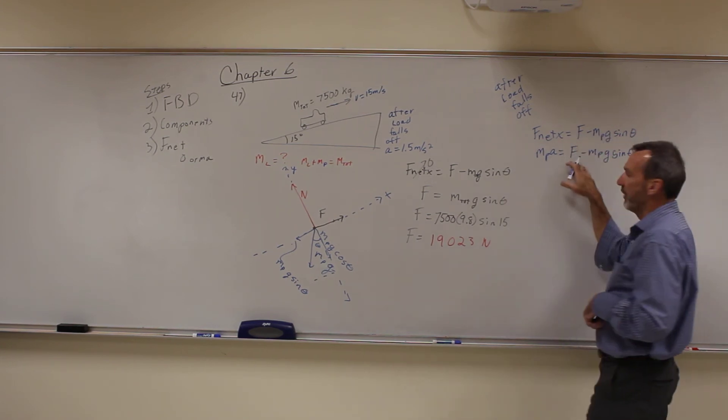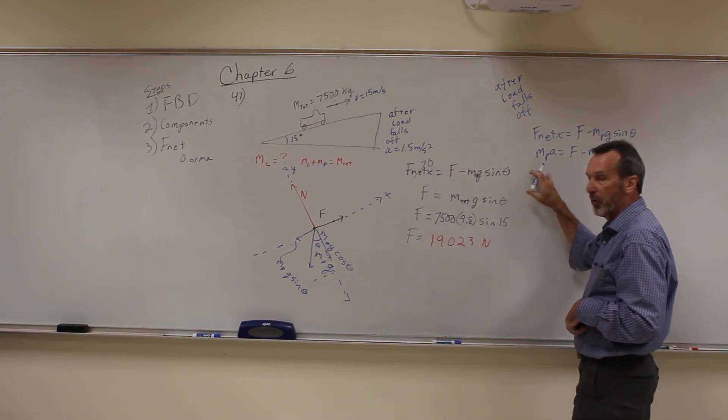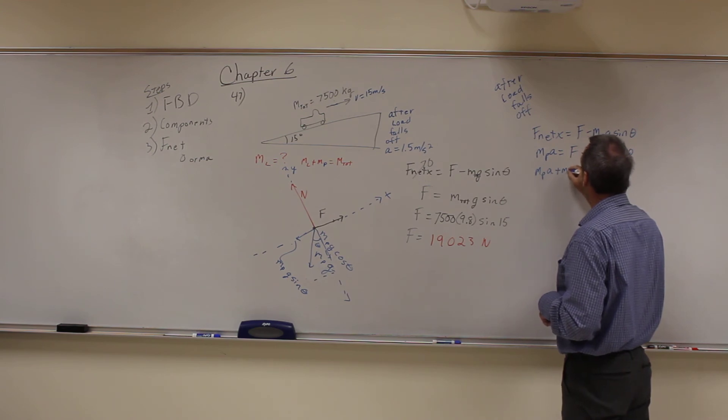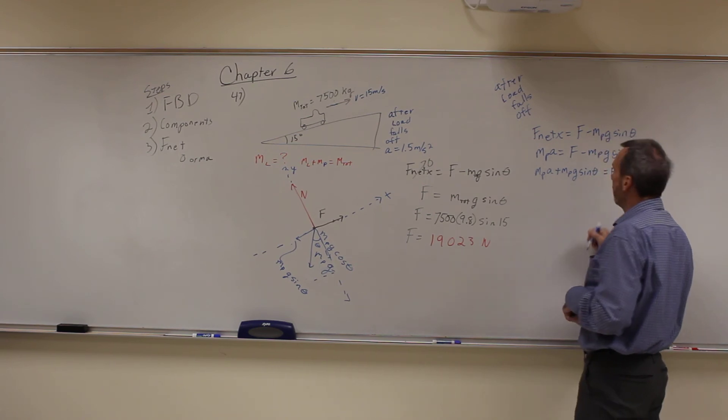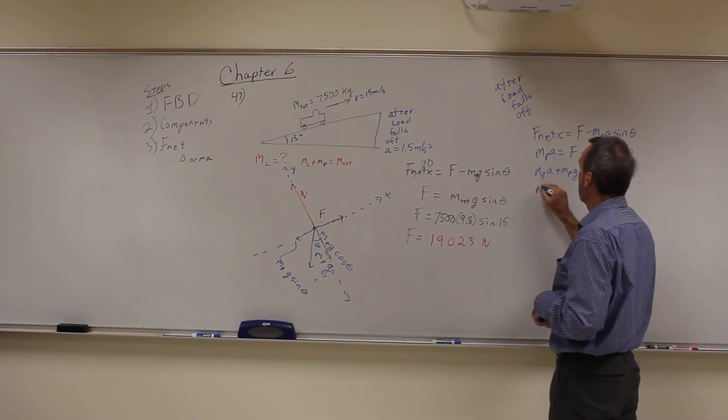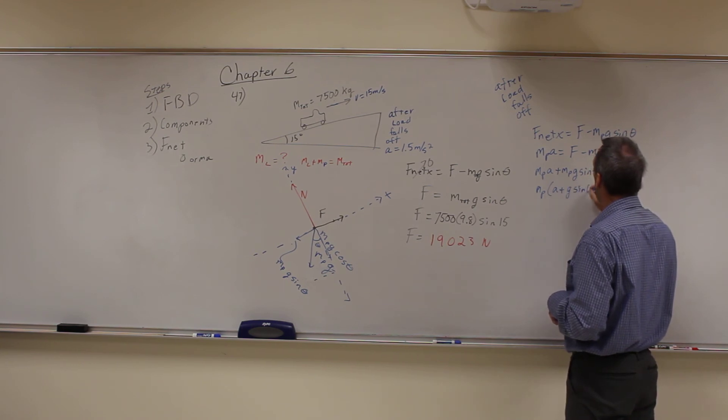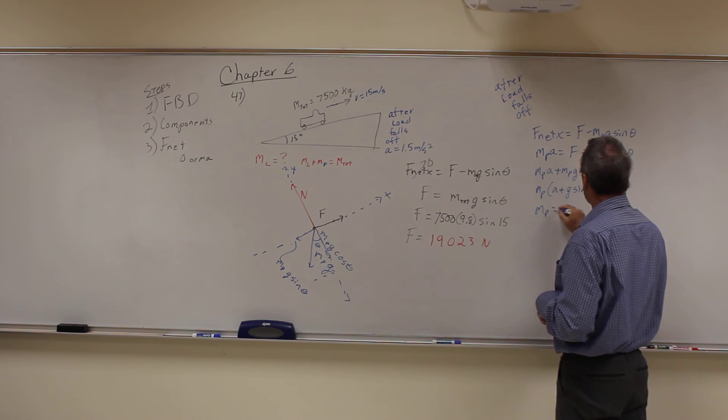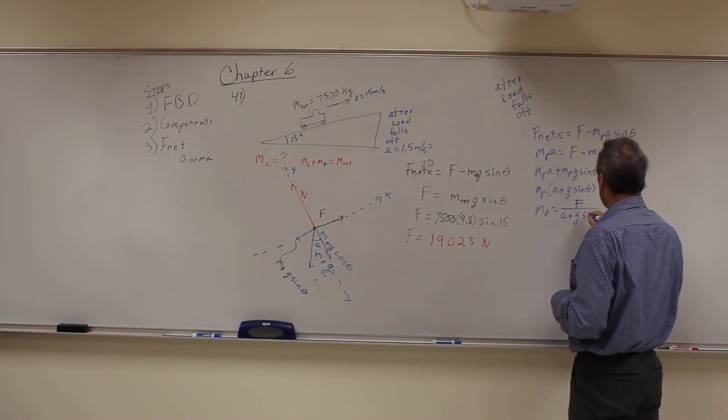This is equal to the same thing. But I want to solve for the mass of the pickup. So I'm going to move this over here so they're both on the same side, because they both have mass of the pickup in here. This must be equal to F. I can factor that out. This becomes A plus G sine of theta is equal to F. And then the mass of the pickup is equal to F over A plus G sine of theta.